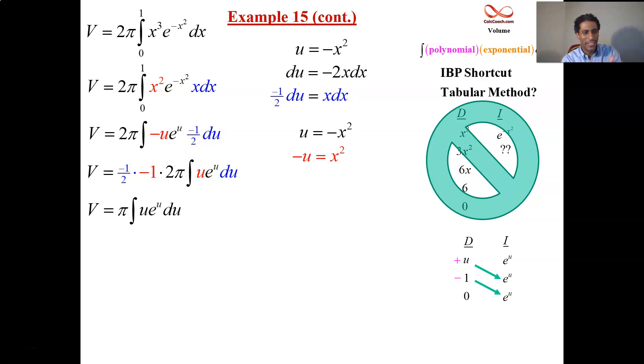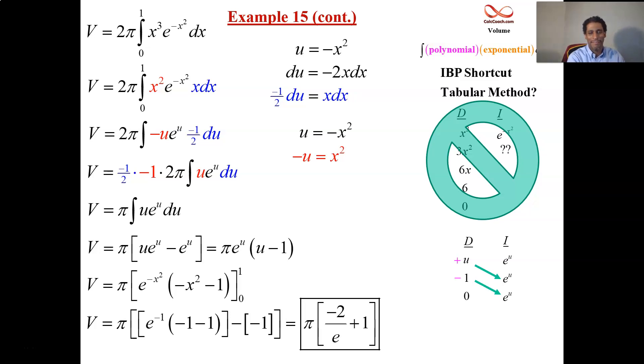The integral of u e to the u is exactly u e to the u minus e to the u. And you can factor out an e to the u from there. All of that is elaborate side work to help us figure out that the anti-derivative of the original function is pi times e to the negative x squared times negative x squared minus 1. The original bounds were 0 and 1. Plug them in and you'll have a negative 2 e to the negative 1. And then you plug 0 in and you'll just have a negative 1. It's a negative 2 over e and plus 1, all times pi. That's your volume.